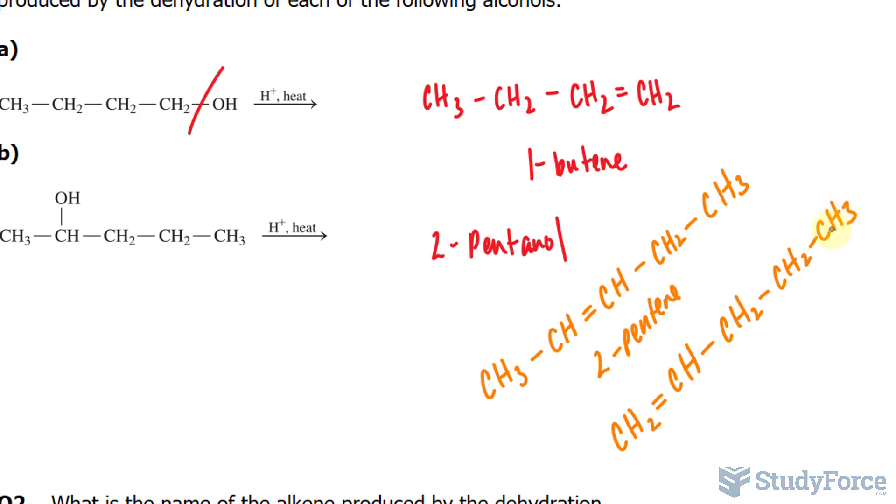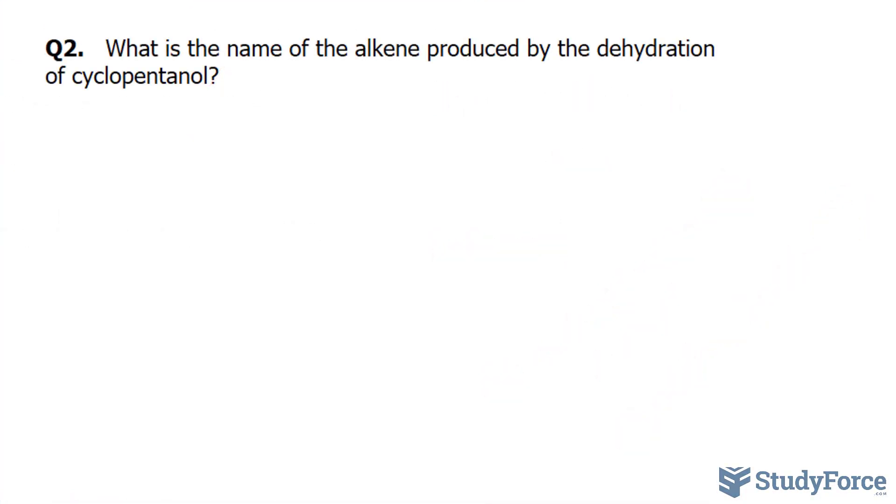In question number two, what is the name of the alkene produced by the dehydration of cyclopentanol? Let's draw this out. We have a carbon ring of 5, and we can place the OH right here. It doesn't really matter. And we want the name of the alkene produced during its dehydration.